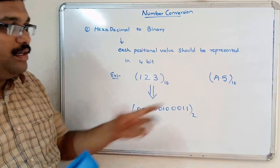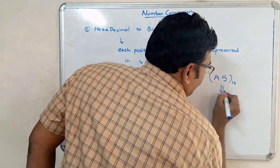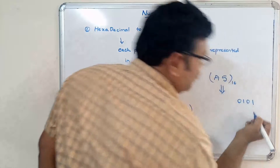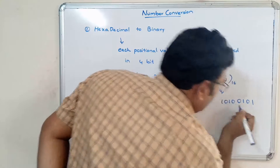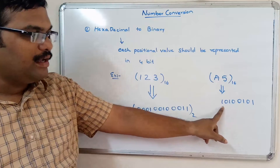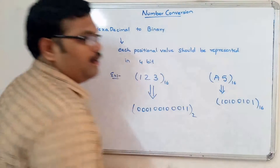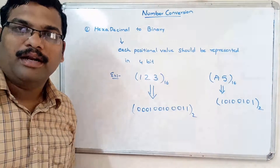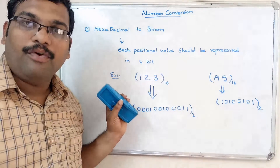Let us take another example: hexadecimal A5. This is hexadecimal because it consists of A to 9 range. A means the number 10. First, 5 is converted into 4 bits: 0101. A, which equals 10, is represented in 4 bits. So we simply consider each positional value and represent it in its 4-bit binary equivalent.